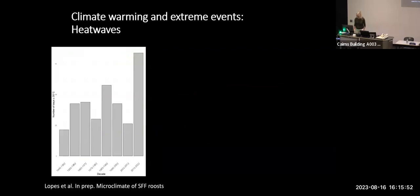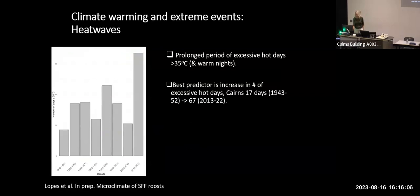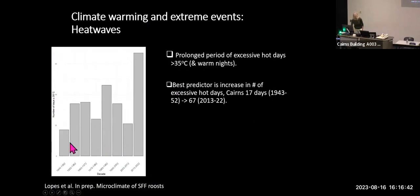Heatwaves are described as prolonged periods of excessive hot days where temperature exceeds 35 degrees Celsius and nights increase in warmth. The best predictor of heatwave conditions is an increase in the number of excessively hot days. Looking at Cairns temperature records over the last eight decades, in our first decade of recorded data there were 17 days above 35 degrees, and our most recent decade has 67. We're reaching the point where we're getting as many hot days per year as we used to get per decade.